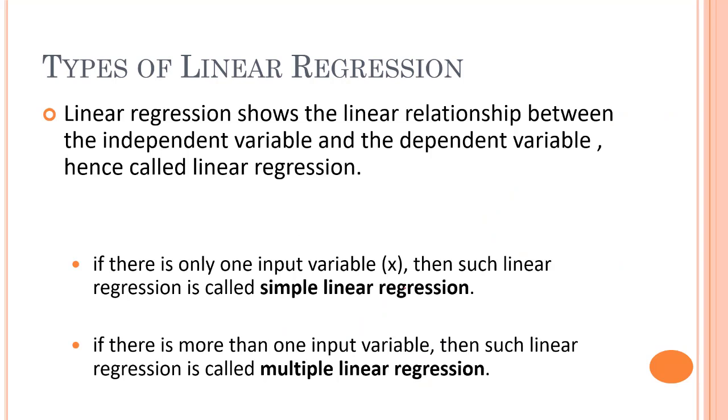Now, what are the different types of linear regression? Linear regression shows the linear relationship between the independent variable and the dependent variable. Hence, it's called linear regression. Again, the same graph. So here's the independent and we have the dependent.